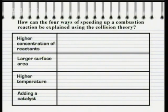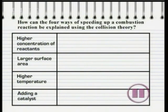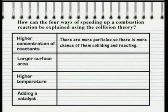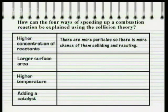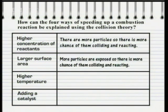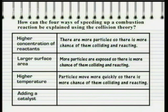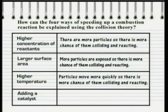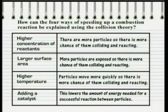How can the four ways of speeding up a combustion reaction be explained by using the collision theory? A higher concentration of reactants, fuel or oxygen, means that there are more particles involved, so there's more chance of them colliding and reacting. A larger surface area of fuel means more particles are exposed to oxygen, so there's more chance of them colliding and reacting. A higher temperature excites particles into moving more quickly, so there's more chance of them colliding and reacting. Adding a catalyst lowers the amount of energy needed for colliding particles to successfully react.